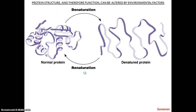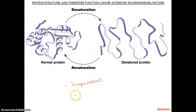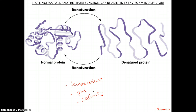Now, proteins can denature, which means the protein comes out of shape. What factors cause proteins to denature? Proteins are very sensitive to temperature — if it's too hot, basically it comes apart, like when you cook an egg. Also pH — proteins are very sensitive to pH — or the amount of salt, or salinity. These are some factors that can cause a protein to come out of shape.